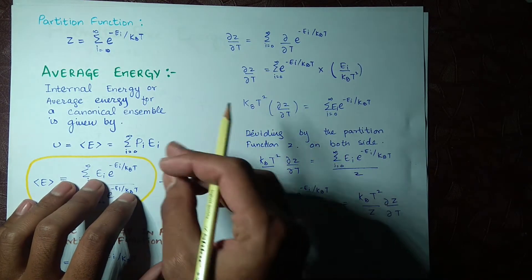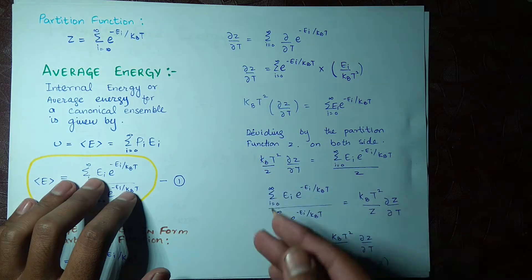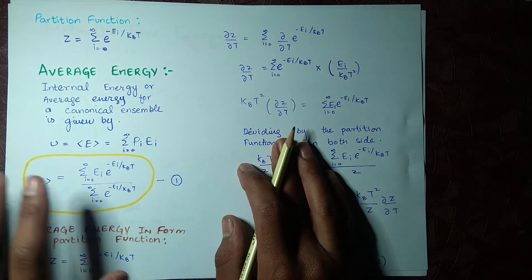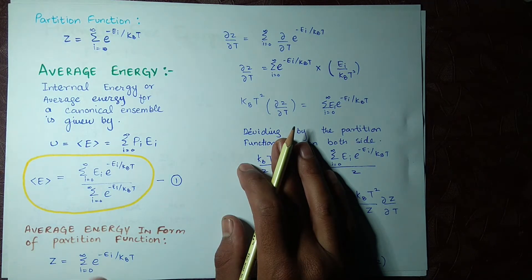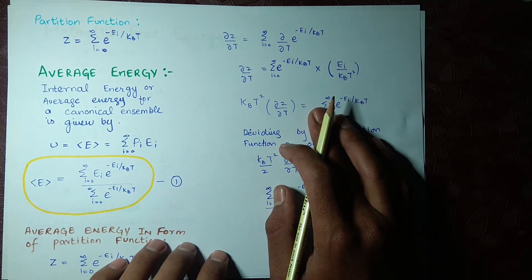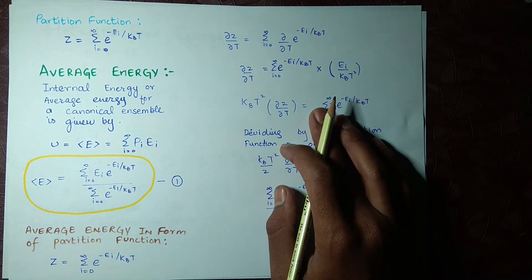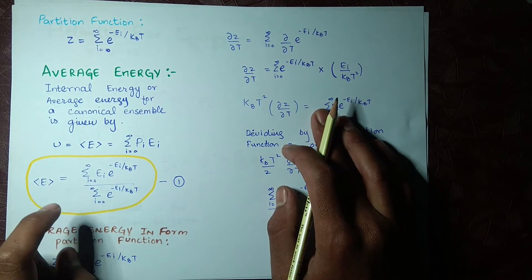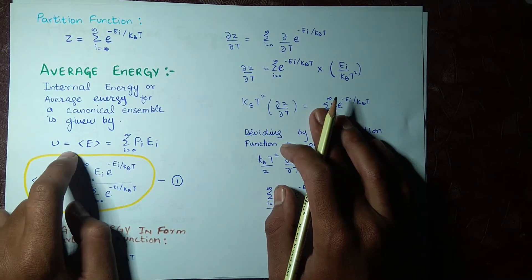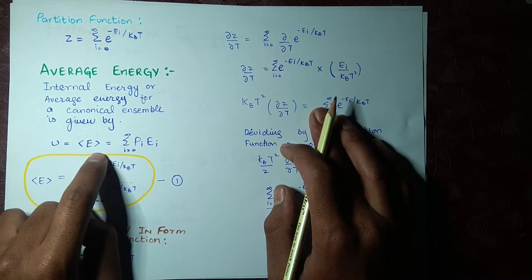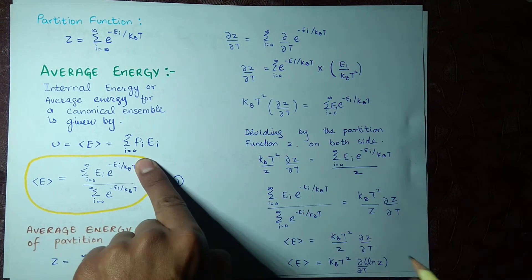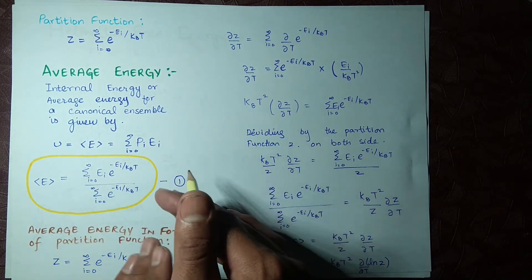Moving on to average energy — we know what average energy is. We also call it internal energy; they are quite similar. We know what it is, but we have never derived the relation for this average energy. So today we are going to find its relation. Starting from the general formula: the average energy is the summation from i equals zero to infinity of p_i times E_i.